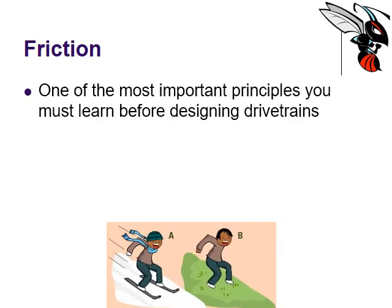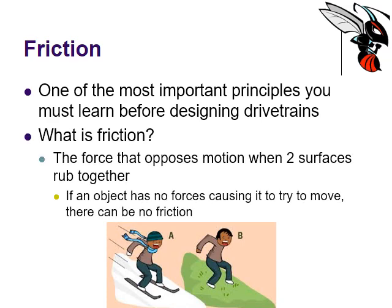One of the most important things you need to understand before building any kind of drivetrain for a robot is friction. In engineering terms, it is the force that opposes motion when two surfaces rub together. We've got little pictures of skiers down there.